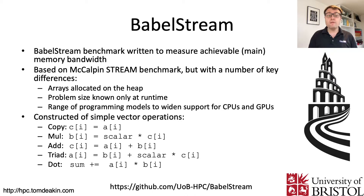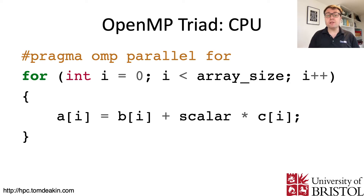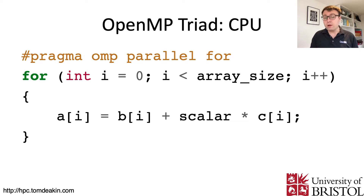Triad takes two vectors, scales one by a scalar value, adds them together, and stores the result in a third array. On a CPU using OpenMP, the code is a simple for loop in C over our three pre-allocated arrays, annotated with the compiler directive pragma omp parallel for. This tells OpenMP to launch threads and work-share the loop iterations between them, making it a parallel loop on a CPU.